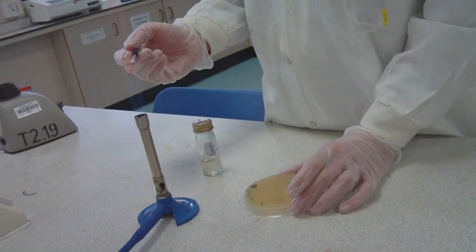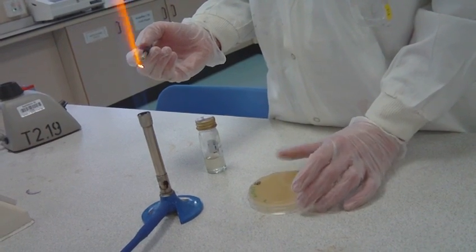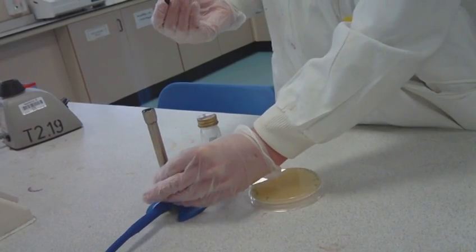Reflame the loop and sterilize before putting away. Turn the Bunsen burner flame back to safety and leave the agar plates on the side to be collected for incubation.